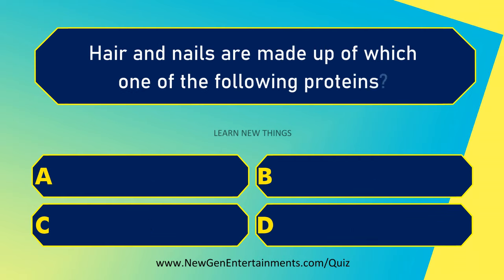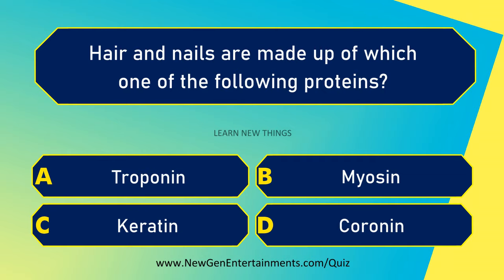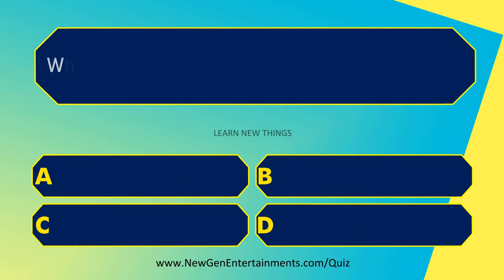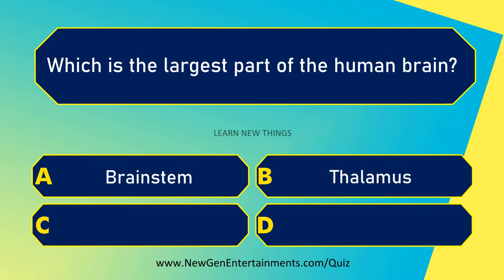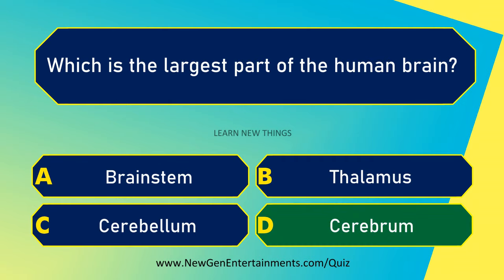Hair and nails are made up of which one of the following proteins? Keratin. Which is the largest part of the human brain? Cerebrum.